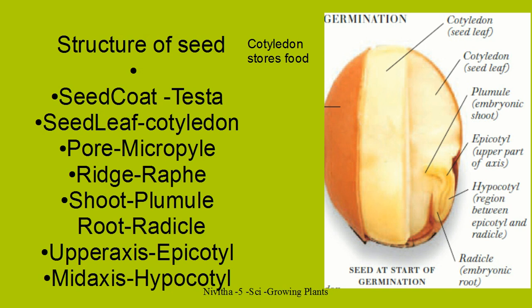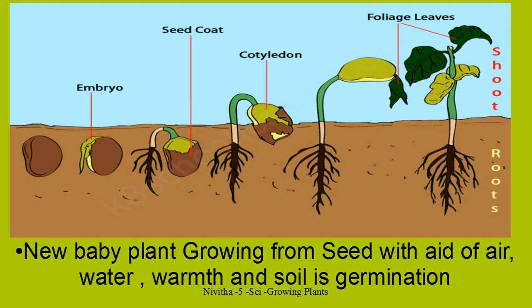This is the place from where the shoot and root come out on a seed. This is the structure of a seed. You should know how to draw a seed and name the parts.